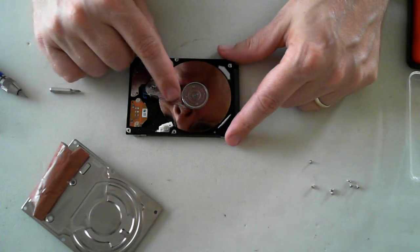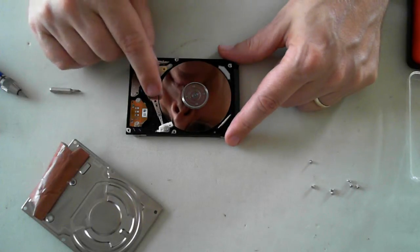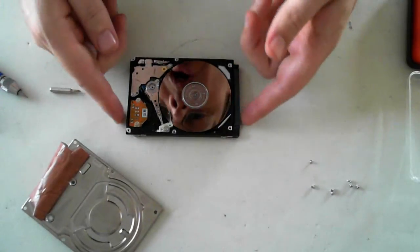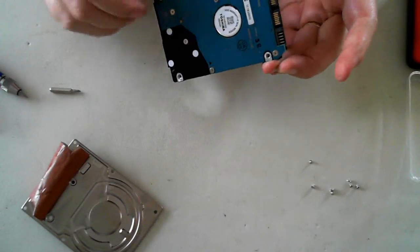The drive heads themselves move over the spinning discs like that and are controlled by the little controller board which is on this side of the drive.